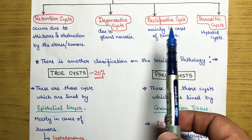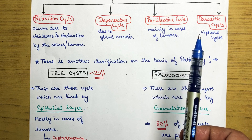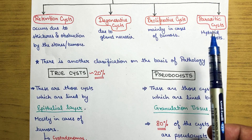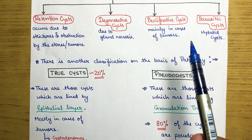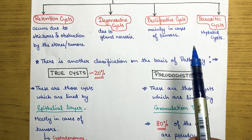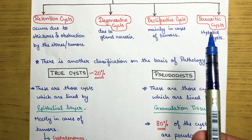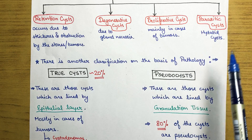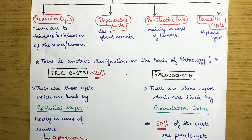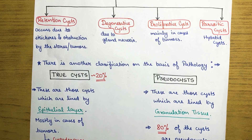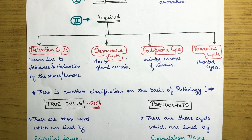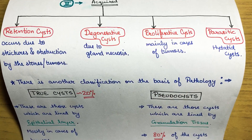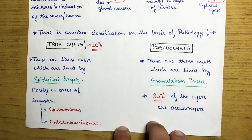The fourth type is parasitic cysts. Whenever a parasite — for example, amoeba or other worms — infects the pancreas, they can form hydatid cysts. So the major classification is congenital and acquired, but there is another classification based on the pathology of the cyst.